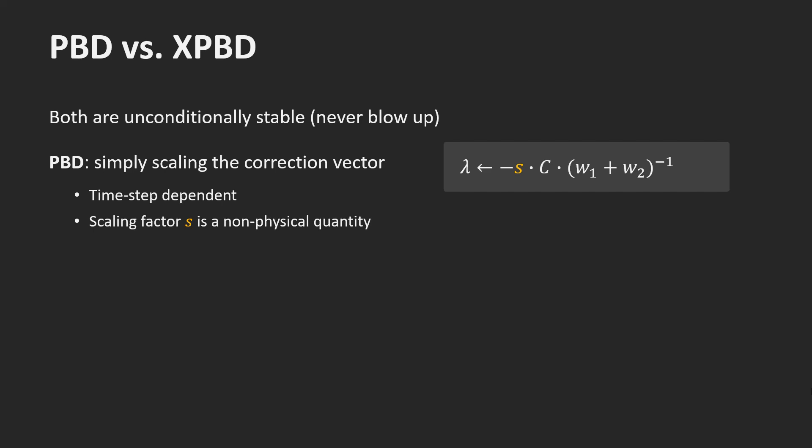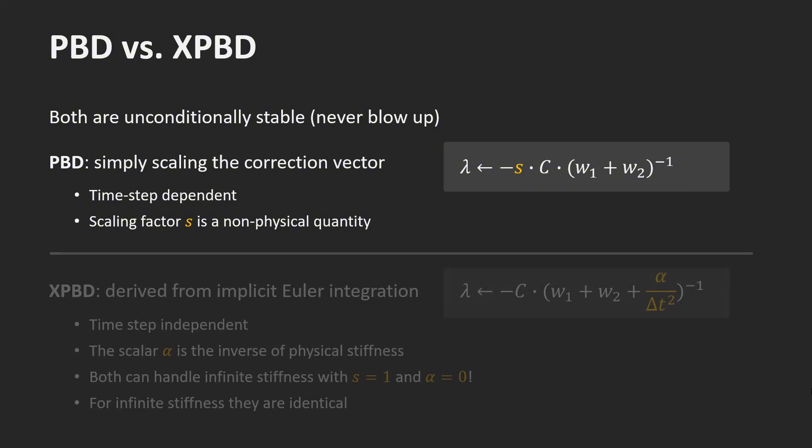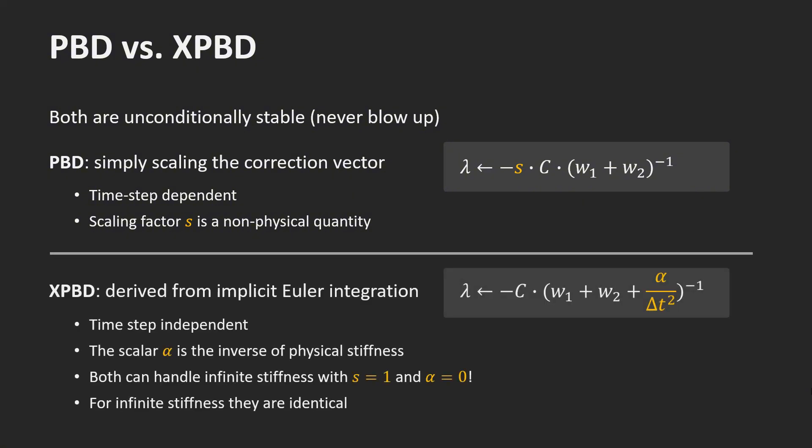However, this way, the effect depends on the time step size. Objects become stiffer for smaller time steps. Therefore, s is not really a physical quantity. Fortunately, this problem can be fixed in a surprisingly simple way by modifying the formula to compute lambda. The new formula is derived from explicit Euler integration. Instead of scaling the constraint, a new term, alpha divided by delta t squared is added to the denominator.